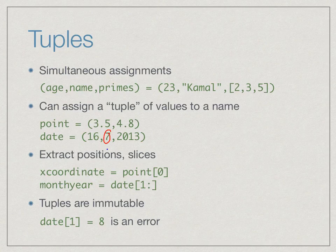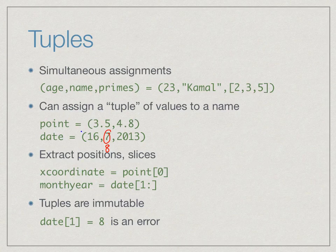Because a tuple is immutable, we cannot change, for instance, date at position 1 by replacing it with the value 8. This is possible in a list but not in a tuple. So tuples are immutable sequences, and we will see in a moment why this matters.